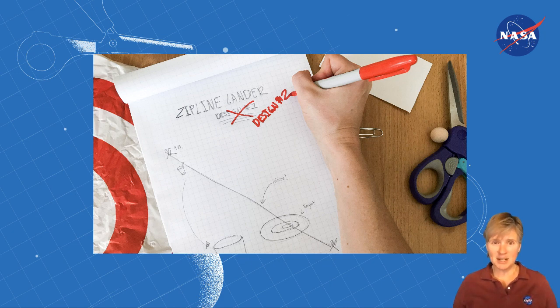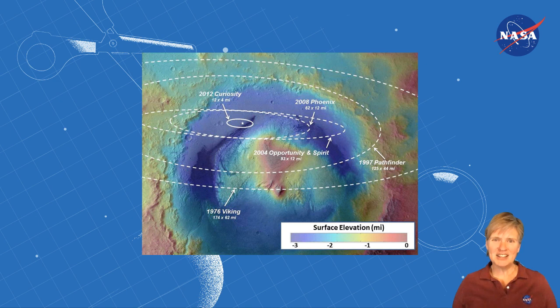Can you consistently get a bullseye? Getting close to the center of the target is what NASA engineers must do when they land a spacecraft on another planet or on the moon.